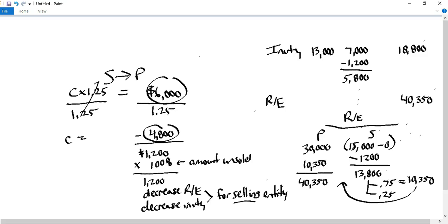Our new concept — intercompany transactions — results in adjustments to receivables and payables when there's an intercompany receivable/payable: we reduce both by that amount to remove double counting. When there are sale transactions from one entity to another and those items haven't been sold to a third party, there's unrealized profit. We reduce inventory and retained earnings for that transaction, and it's important to identify which entity is the selling entity — in this case it was the subsidiary, sometimes it's the parent.